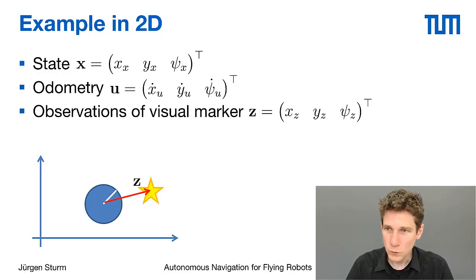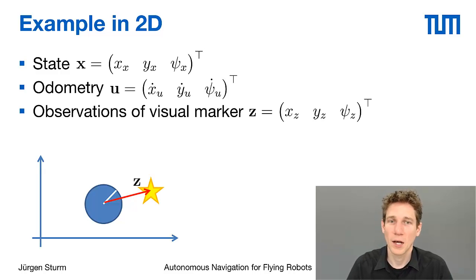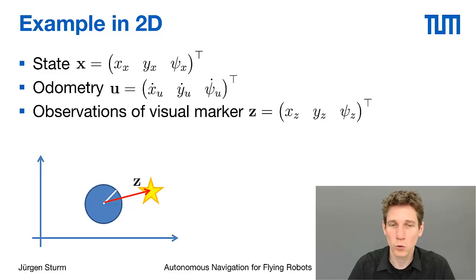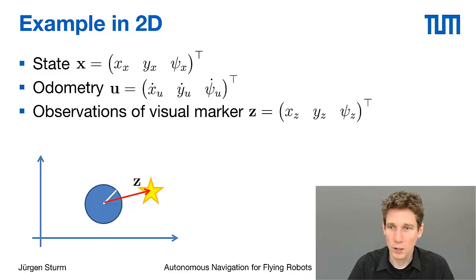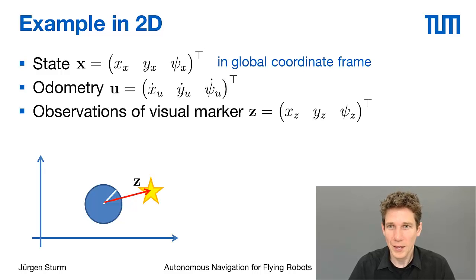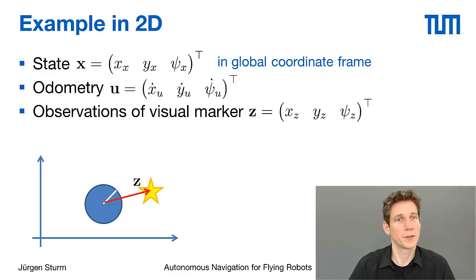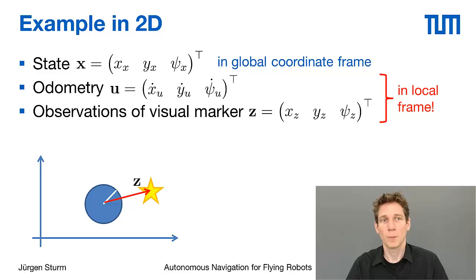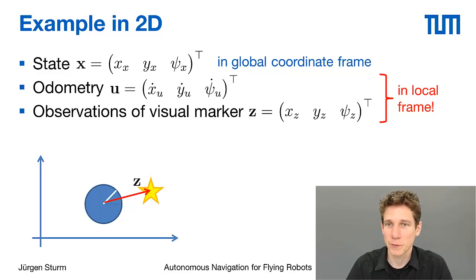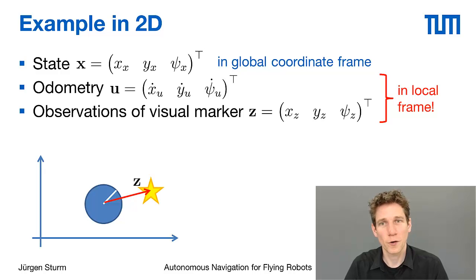Furthermore, the robot occasionally makes observations. It sees a visual marker with its camera and can determine its pose relative to the robot — the marker at a particular location x, y, and orientation psi. It's important to note that we represent the state in global coordinates, so x, y, and psi are with respect to a global coordinate frame located somewhere in the world.